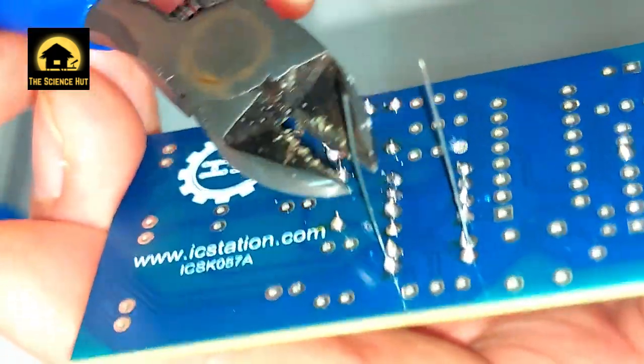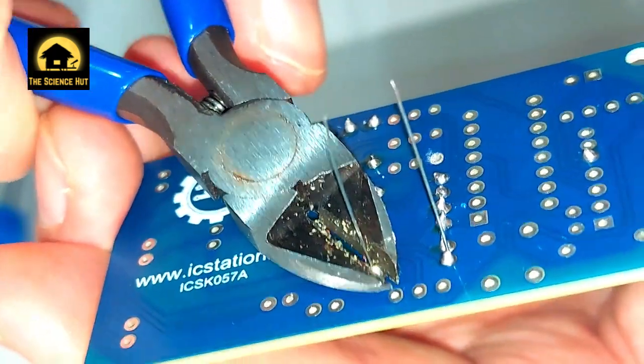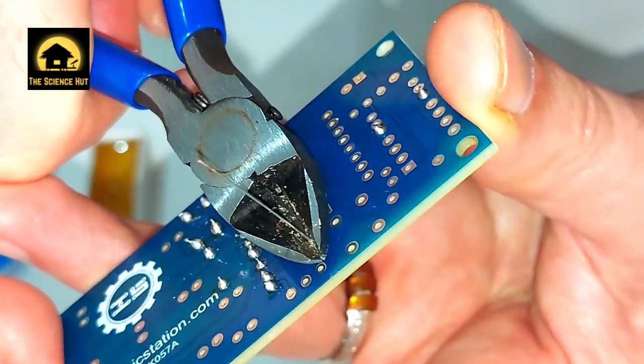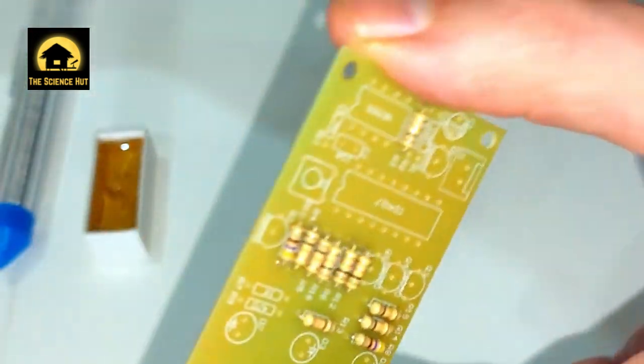Inspect closely to make sure the connection is good. Use your wire snips to snip away the excess stems from the components. Be sure to get close to the PCB when snipping.